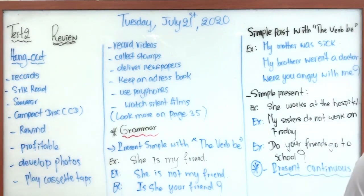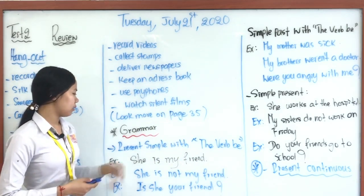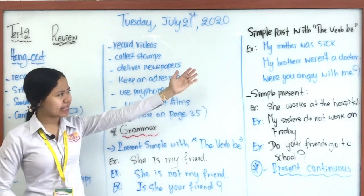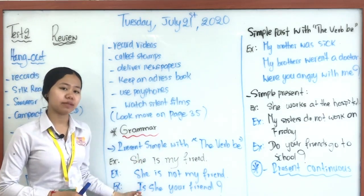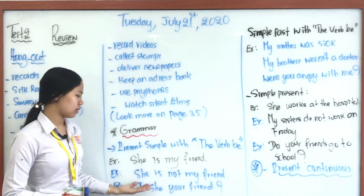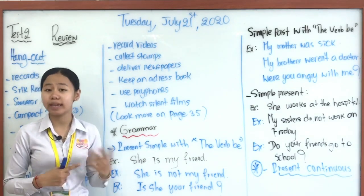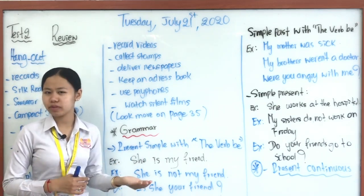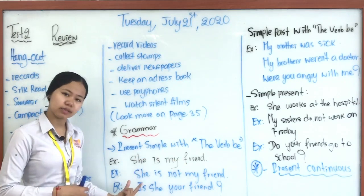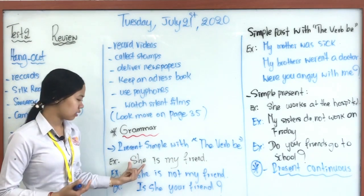For the grammar part, teacher also wants to review. Look here — what will appear in your exam: present simple with the verb 'be' — positive form, negative form, and question form — and simple past with the verb 'be' as well. For present simple with the verb 'be': subject 'I' uses 'am,' 'he/she/it' uses 'is,' and 'you/we/they' use 'are.' That is the main point. In the positive form, for example, the subject 'she' — we use 'is' — so 'She is my friend.'